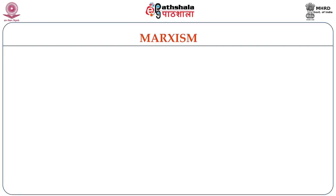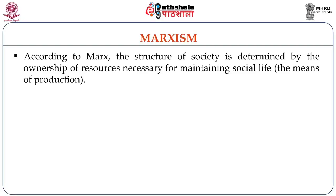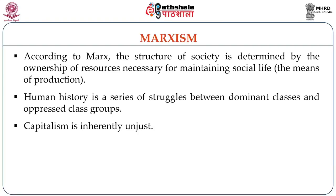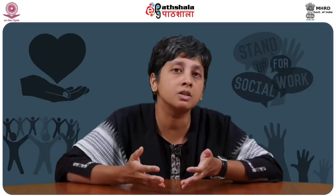Marxism sits at a radically different end of the continuum. According to Marx, the stark structure of a society is determined by ownership of resources for maintaining social life. Means of production, according to Marx and Marxists, is unequally owned by different groups and people in a society. Human history is a series of struggle between those who own or control means of production and those who have been historically deprived of such control and who constitute the oppressed class. Capitalism therefore, in all forms and shapes, with or without welfare, is essentially unjust because it creates oppression.